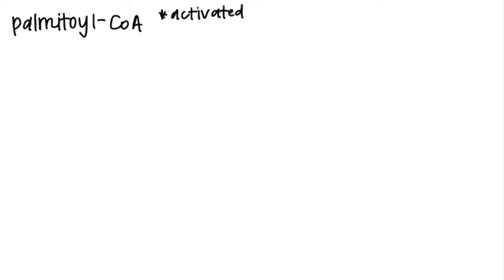Hi everyone, today I'm going to go over how to count the ATP yielded from different types of fats. Our first example asks how much energy is yielded from palmitoyl-CoA. Palmitoyl-CoA is the activated version of palmitate, and we know that palmitate is 16 carbons. I went ahead and drew out the fatty acids so you can visualize the math that we're going to do.